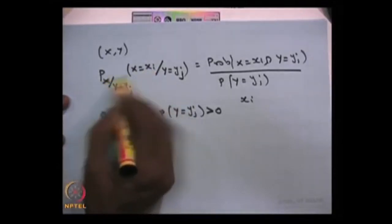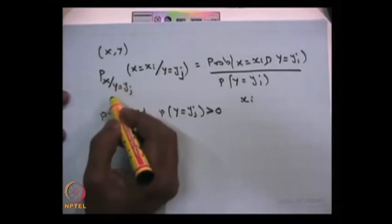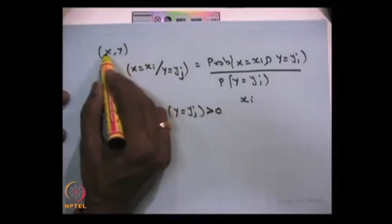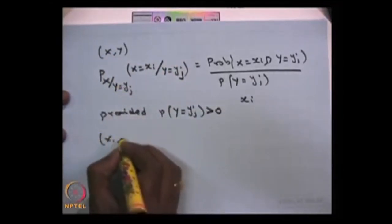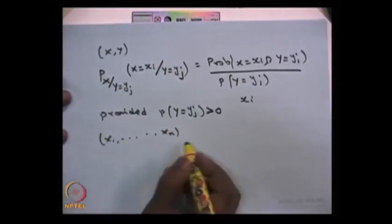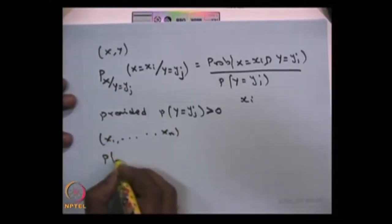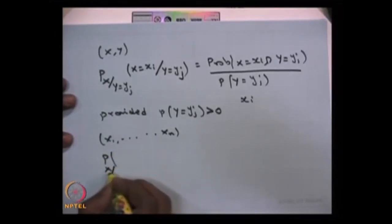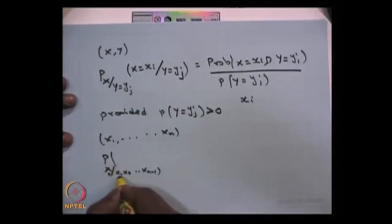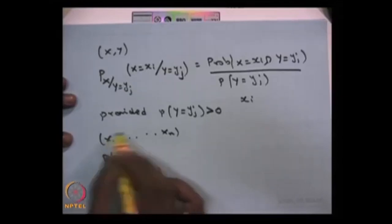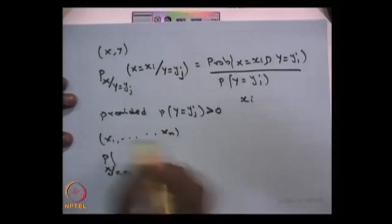This is called the conditional distribution of X given the other random variable, and this logic can be extended to more random variables. If you have n discrete random variables X1, X2, ..., Xn, you can always define the conditional distribution of Xn given the values of X1, X2, ..., X(n-1). Similarly, you can define the joint distribution of a subset of random variables given that all other random variables have already taken some particular values.